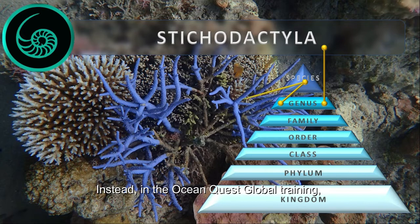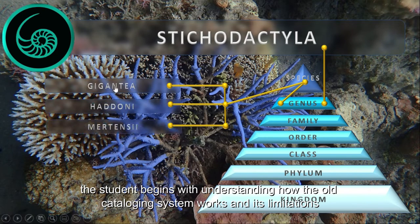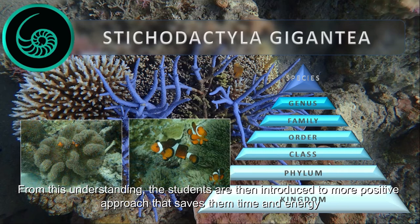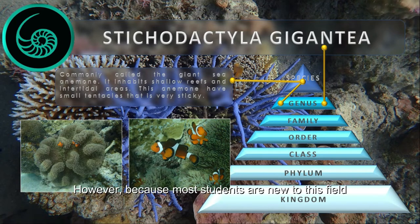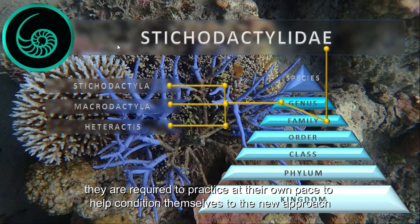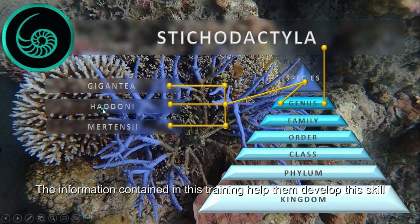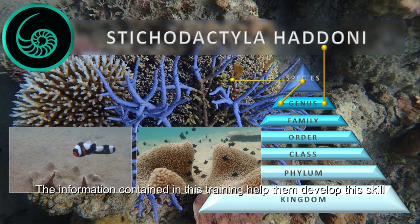Instead, in the OceanQuest Global training, the student begins with understanding how the old cataloging system works and its limitations. From this understanding, students are then introduced to a more positive approach that saves them time and energy. However, because most students are new to this field, they are required to practice at their own pace to help condition themselves for the new approach. The information contained in this training helps them develop this skill.